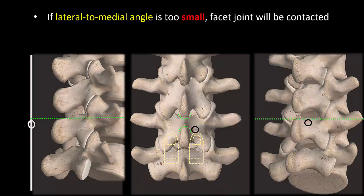If the lateral to medial angle is too small, the needle may contact the facet joint rather than the lamina.